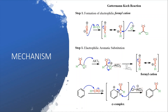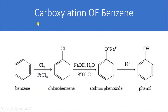Vice versa, if an electron-deactivating group such as a nitro group is present, the rate of the formylation reaction will decrease. For carboxylation reactions of benzene, whether formylation or other carboxylation, you need an electron-rich benzene ring with a pre-existing electron-donating group. The carboxylation reaction is feasible if you have phenol.